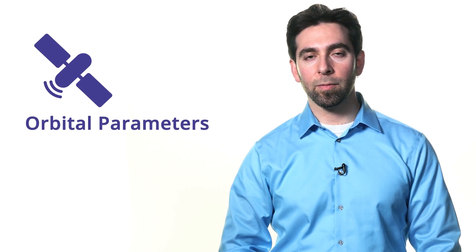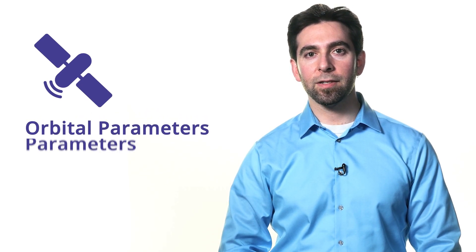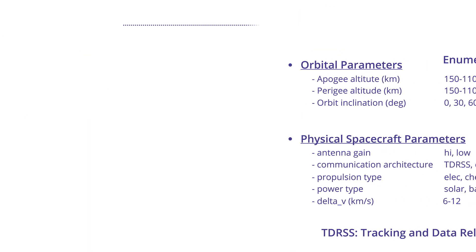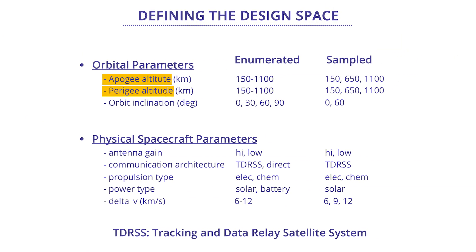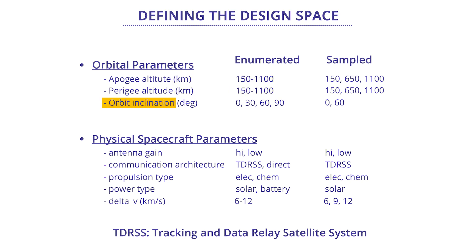Consider a satellite system with two types of design variables. One type are orbital parameters, and the other type are physical spacecraft parameters. Orbital parameters include apogee altitude, perigee altitude, and orbital inclination. The altitudes are in units of kilometers and have an enumerated range from 150 kilometers to 1,100 kilometers. Our orbital inclination has an enumerated range at 0, 30, 60, and 90 degrees.